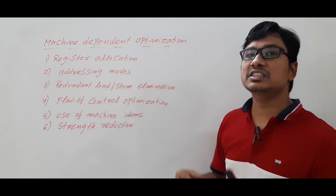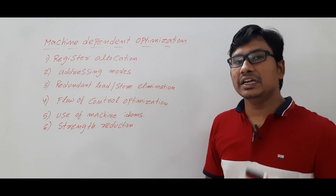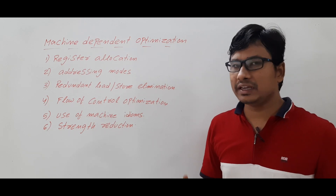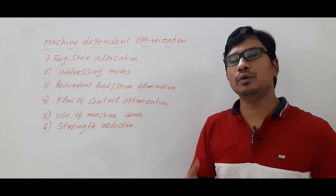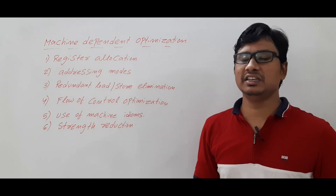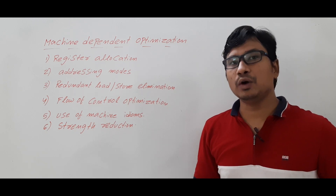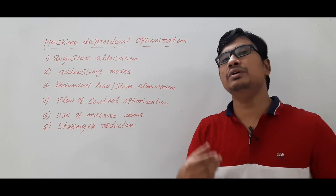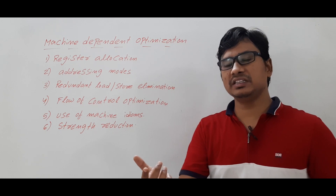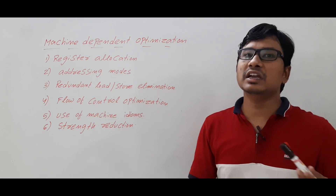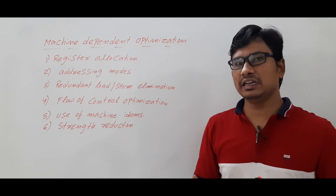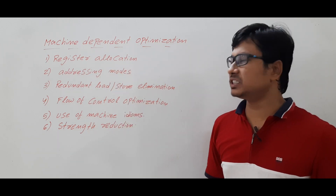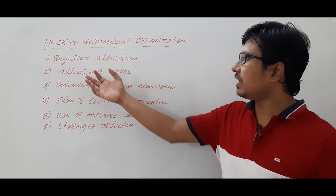The first machine-dependent code optimization technique is register allocation. It will vary from each machine to machine because one machine may have 16 registers, another may have 32 registers, and one machine can have 16-bit registers while another may have 32-bit registers. So it will vary from each machine to machine.